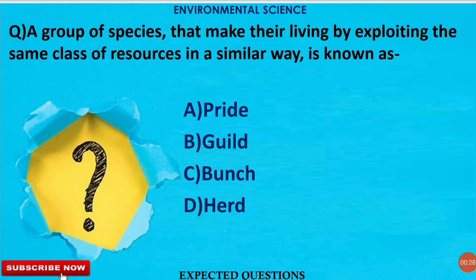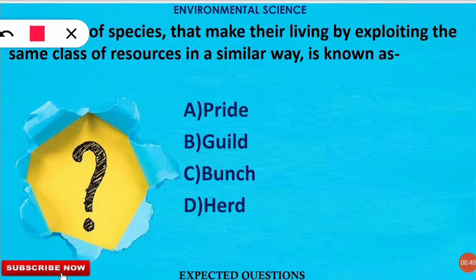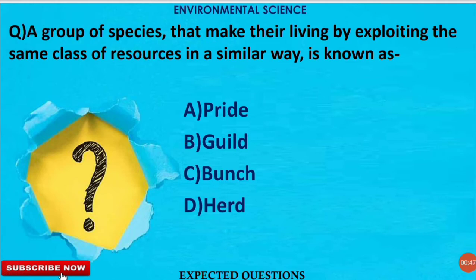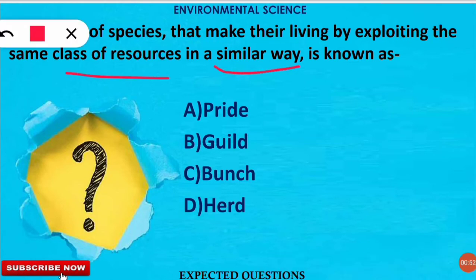The first question is: a group of species that make their living by exploiting the same class of resources in a similar way is known as what? The correct answer is option B — Guild. A guild is the group of species that make their living by exploiting the same class of resources in a similar way, whether in their way of eating, foraging, or resource exploitation.